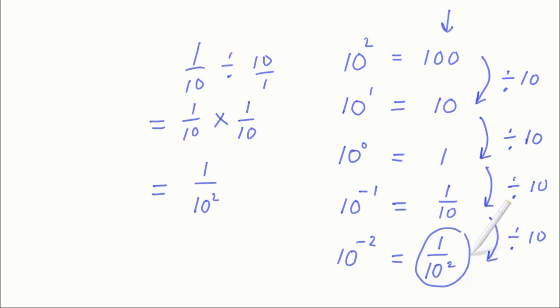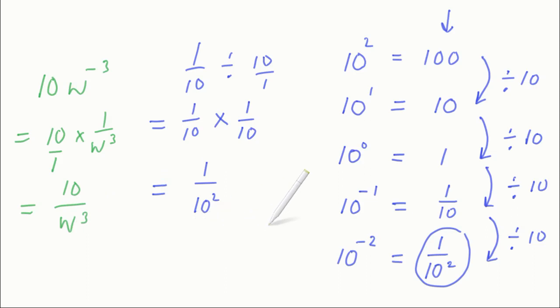That's showing why the negative powers can be written in this form. All you really have to know is how to change the negative powers. If you had 10w to the minus 3, that's going to be 10 times 1 on w cubed. Multiplying tops together and bottoms together, 10 on w cubed.